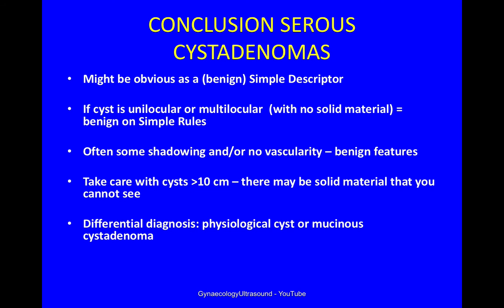In conclusion, when you see a cyst and think it's a serous cystadenoma, it might be obvious as a benign simple descriptor. Or if it's not obvious, if the cyst is unilocular or multilocular with no solid material and no malignant features, it would look benign on simple rules. Often there is shadowing with or without vascularity, and these are benign features. Take care with cysts larger than 10cm as there may be a papillation or solid material you cannot see. The differential diagnosis would be a physiological cyst or possibly a mucinous cystadenoma.